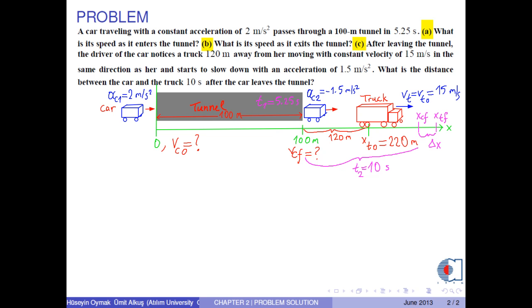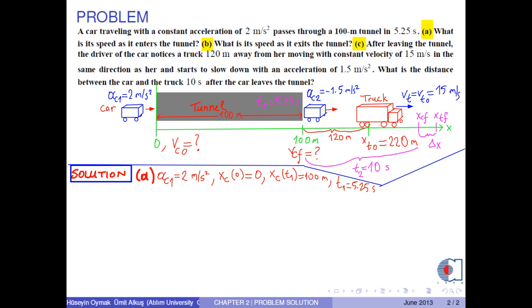For the solution of Part A, first we write the given quantities for the car. So, to find the speed of the car as it enters the tunnel, we use this formula for the position of the car. With this, we can find an expression for the speed as it enters the tunnel.